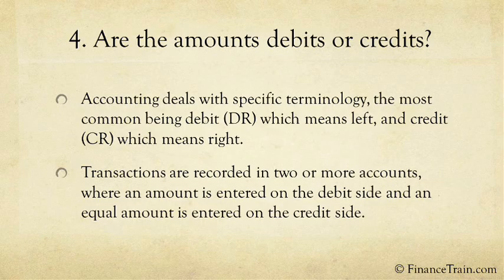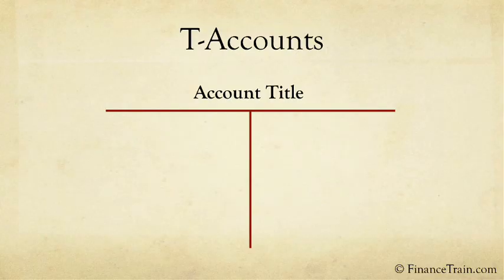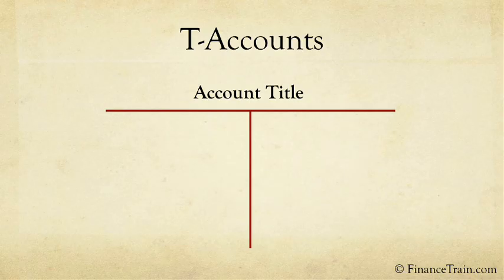The practice of recording amounts on two sides is intended to minimize errors. An informal way to show debits and credits is to create a T-account. T-accounts display the title of the account, the left side and the right side.